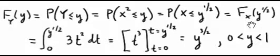So now all we need to do is find the cumulative distribution function of x evaluated at y to the 1 half. That's by definition the integral from the lower end point of the interval of 0 for the support of x is 0.